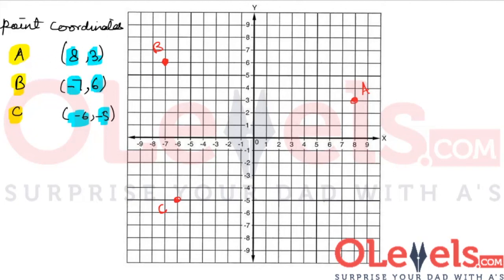So that's the basics of coordinate geometry and the Cartesian coordinate system. Next, what we'll learn is how we can find the distance between two points. For example, if we were to find the distance between point A and point C, how could we do that?